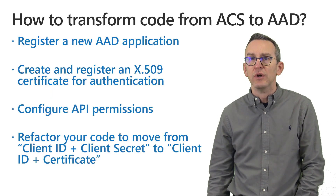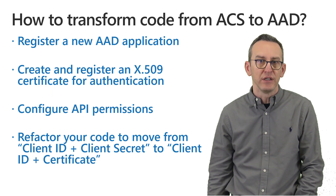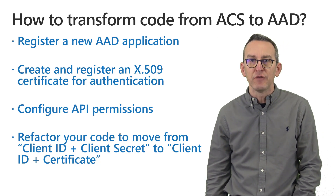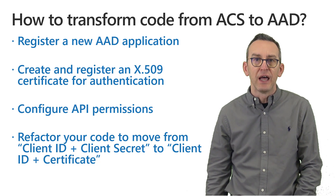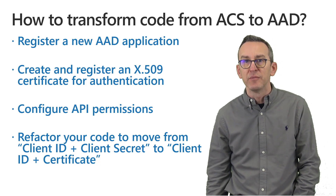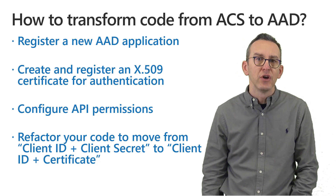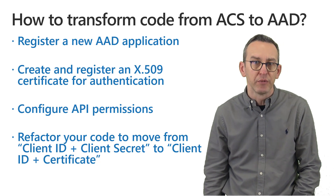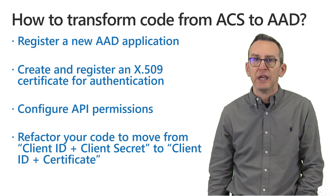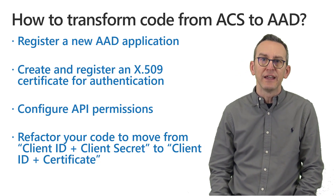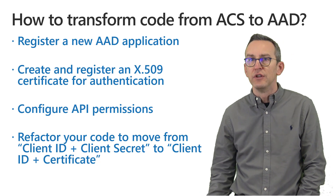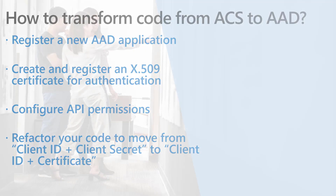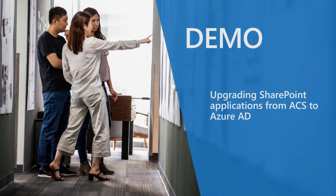So how can you upgrade from ACS to AAD? First, you need to register a new Azure Active Directory application and create an X.509 certificate for authentication, since SharePoint Online app-only requires you to authenticate using an X.509 certificate. You then configure the API permissions your application needs to consume SharePoint Online, and finally refactor your code to move from the old client ID and client secret with ACS to the new Azure Active Directory OAuth flow using a client ID with a certificate.